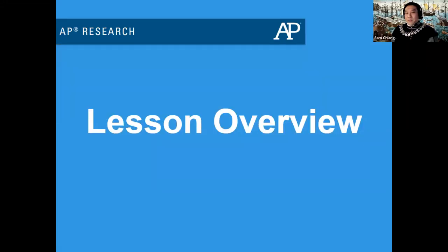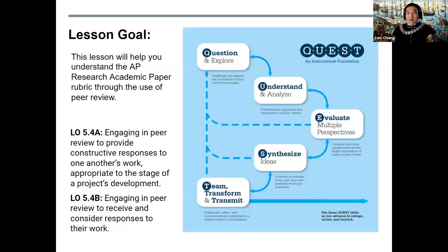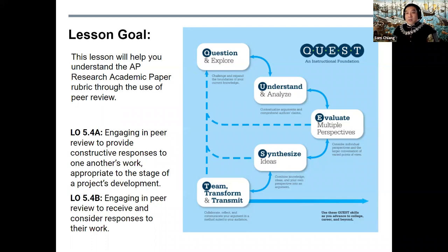Let's begin with the lesson overview so you know what to expect. Our goal is to really help you grasp the expectations of the academic paper rubric through the use of peer review. Remember, the quest process of AP Capstone is recursive. As you review these samples, you may realize you need to revisit different parts of the quest framework, and that's okay. We will be here when you are ready to discuss the peer reviews.